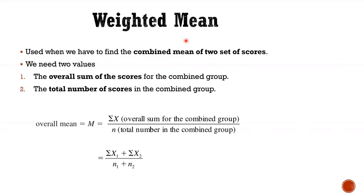Now what is a weighted mean? It is used when we have to calculate a combined mean of two sets of scores. The overall mean will be sum of x1 plus sum of x2 divided by total number in the combined group that is n1 plus n2.